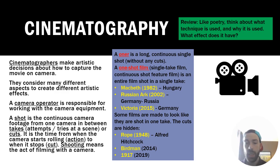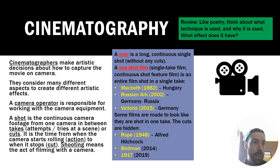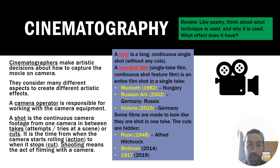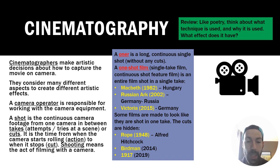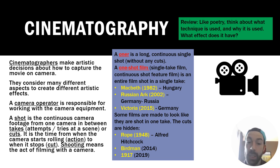Let's get started with our discussion on cinematography. Cinematography is the process of capturing footage on camera. This is what makes movies different from other art forms — we're working with technology we call cameras, using those cameras in particular ways to tell a story. Cinematographers are the people involved in movie making that make artistic decisions about how to capture the movie on camera, considering many different aspects to create different artistic effects based on the story they're trying to tell.